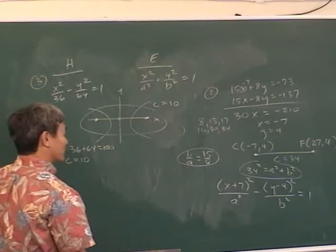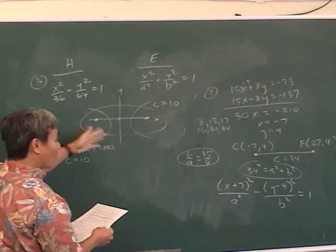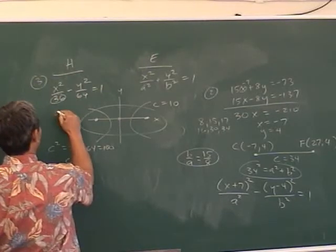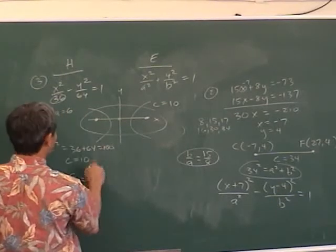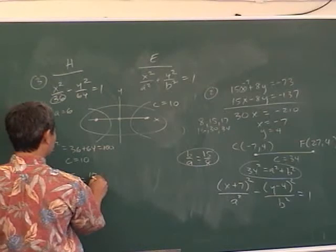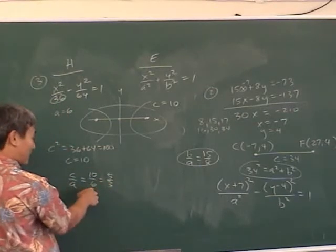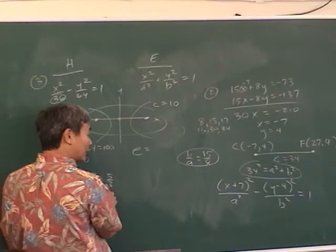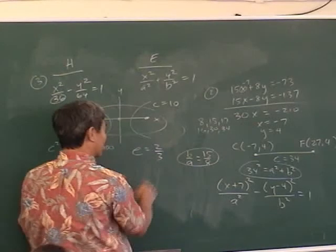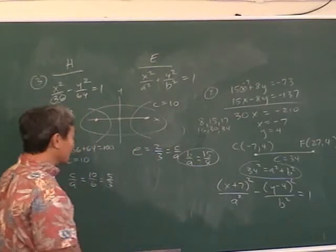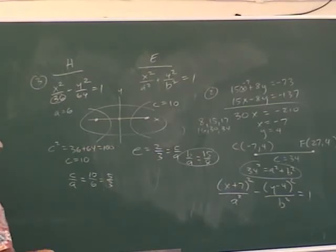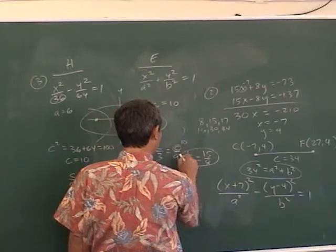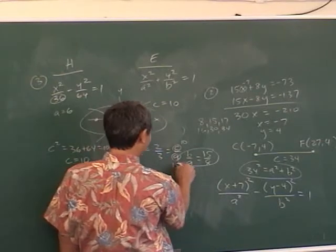The eccentricity of the hyperbola is one more than the eccentricity of the ellipse. For the hyperbola, a is 6, so c over a is 10/6 which reduces to 5/3. If 5/3 is one more than the ellipse's eccentricity, then the ellipse eccentricity is 2/3. So c over a equals 2/3 — we already have c = 10, so the scale factor is 5, making a = 15.